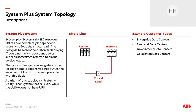System-plus-system is probably the most common topology we see in data centers. As the name implies, it uses two completely independent systems to feed the critical load — system one or system two can each feed the entire critical load. For example, in direct DC power at the rack, taking 480V to the rack, they were still using system-plus-system with an A feed and B feed going to each rack at 480 volts. With this system, utilization is limited to 50%, but we see it in all types of customers.